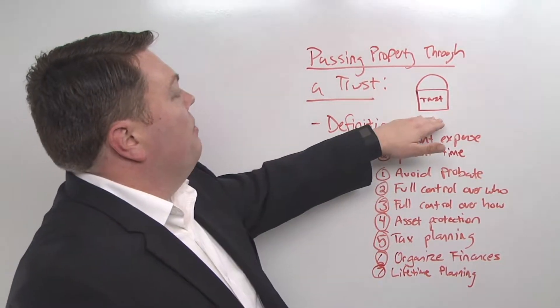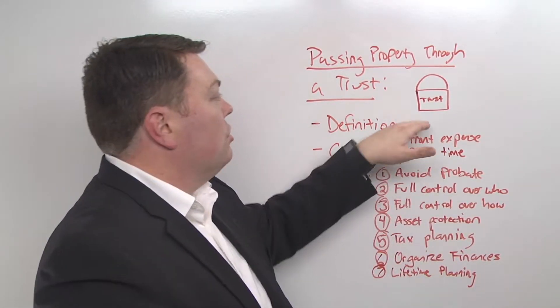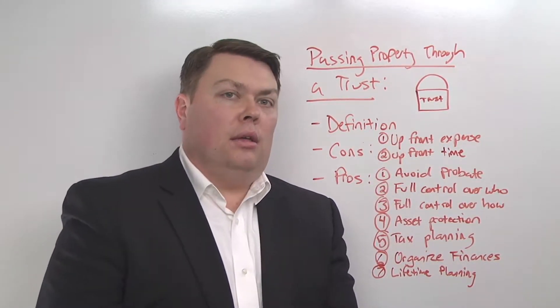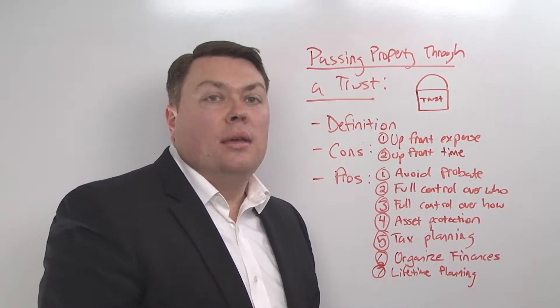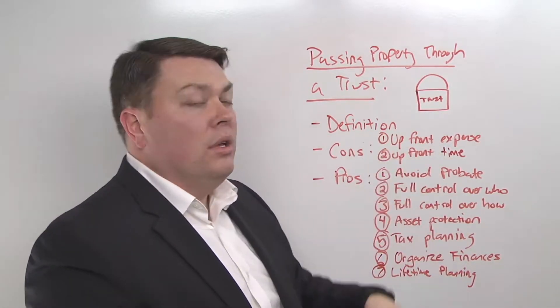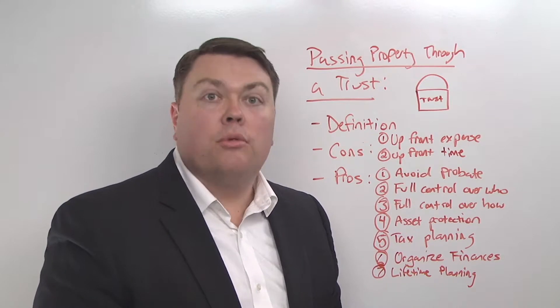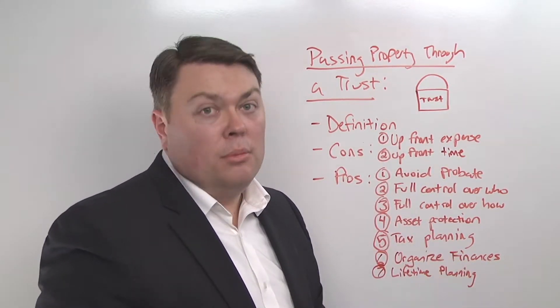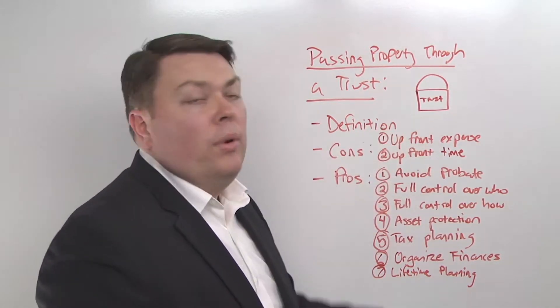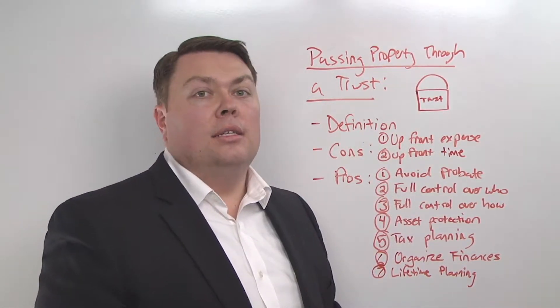So that's one of the big differences between maybe a will and a trust. This trust exists while you're living, and a will only comes into existence after you've passed away. Another difference is a will is a letter to the probate judge, so it still has to go through probate. But a trust, a living trust or revocable living trust, avoids probate because there are terms within the trust that deal with everything.